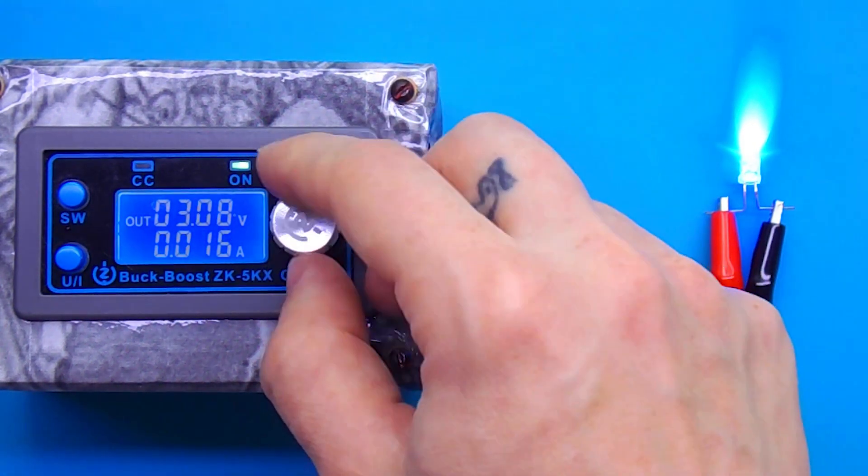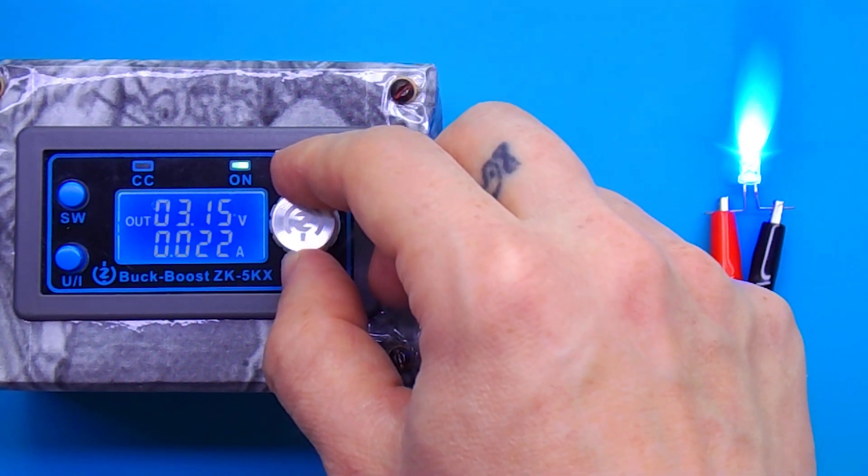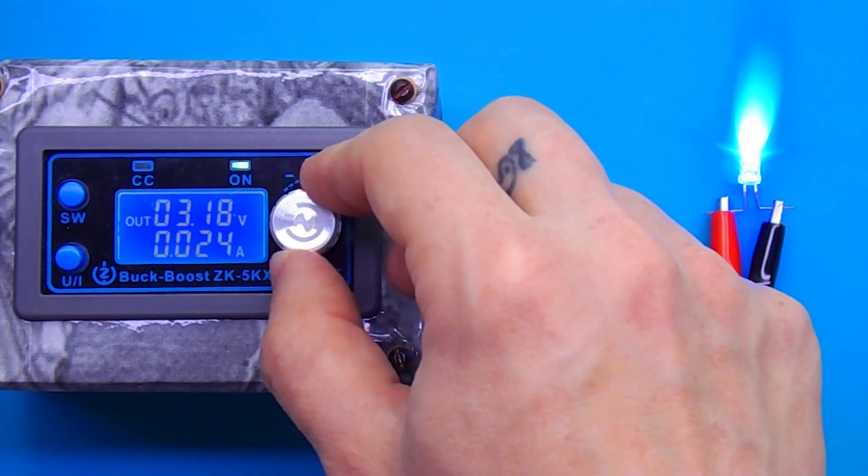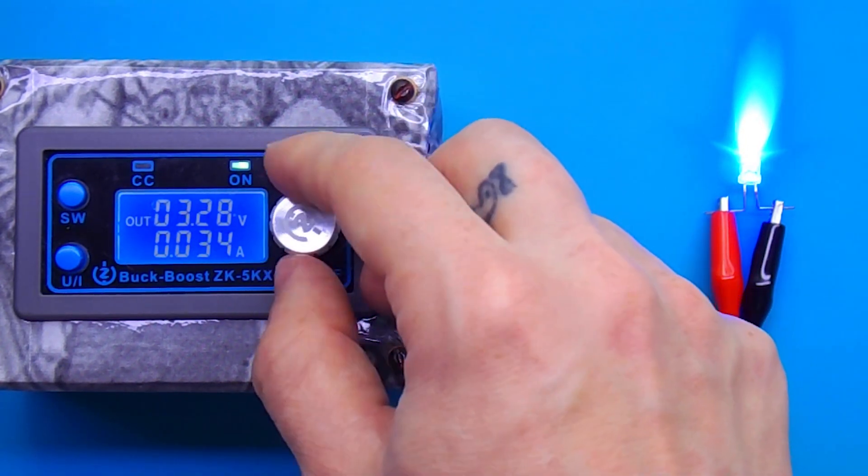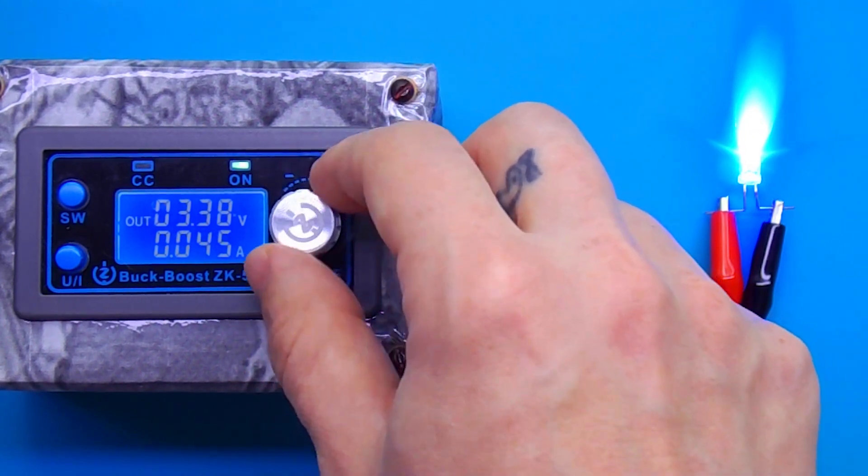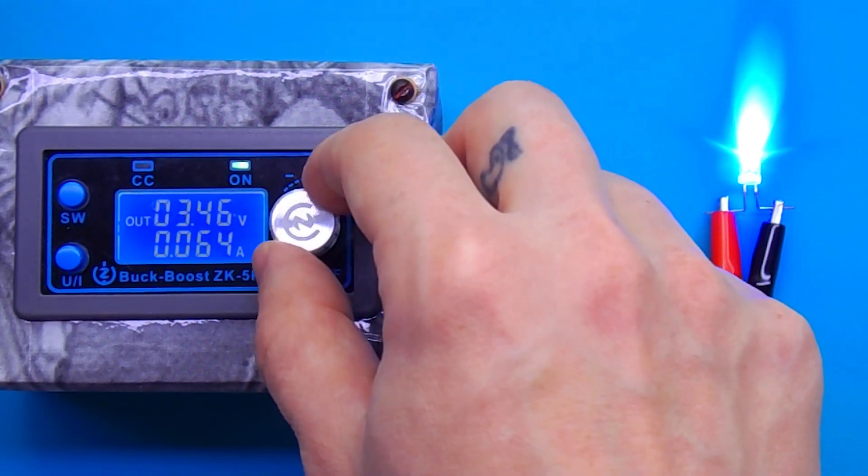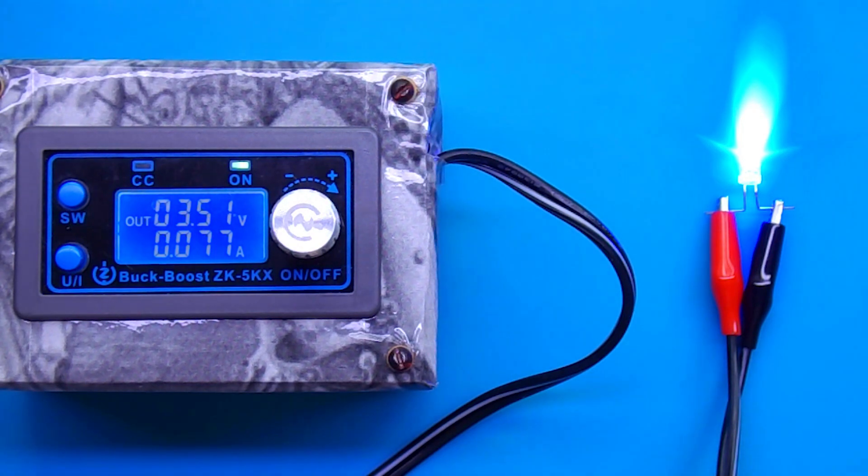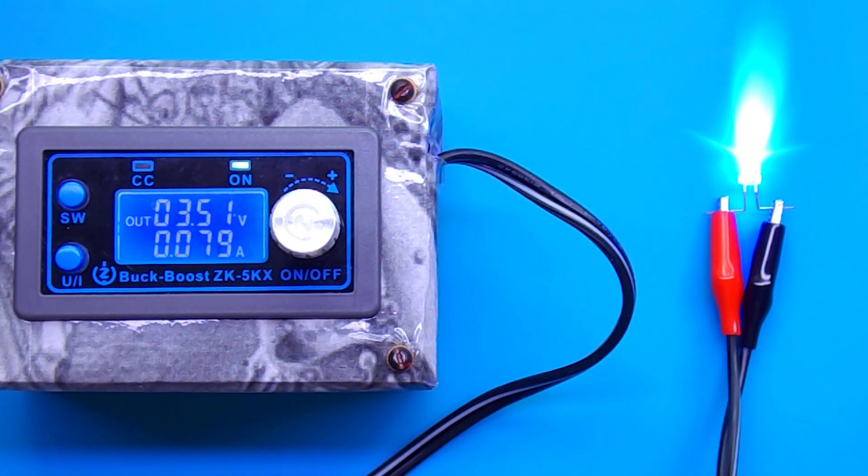If the voltage is raised further, then the brightness does not increase much, but the current consumption becomes very large. With such a large current, the LED begins to noticeably heat up. In this mode it will work, but its life will be greatly reduced. Therefore, it is better to take a working 3 volts.